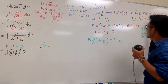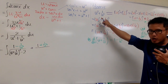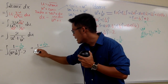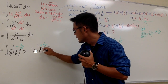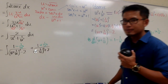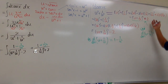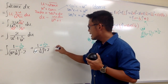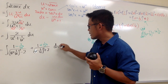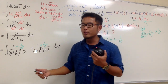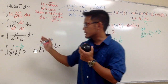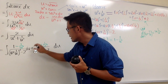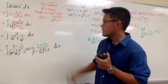So now I have two integrals. Let me split them so we can focus on the first one and then the second one separately. The first integral has (1 − 1/u²) du over (u + 1/u)² − 2, and the second has (1 + 1/u²) du over (u − 1/u)² + 2.